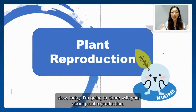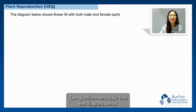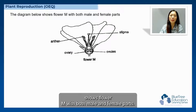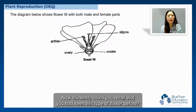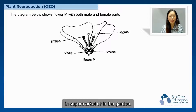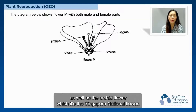Today I'm going to share with you about plant reproduction. The question here says that the diagram below shows a flower with both male and female parts. Could you recall that you have seen this type of flower before? Normally you can find this type of flower in the supermarket or in the garden — typically the hibiscus as well as the orchid, which is Singapore's national flower.